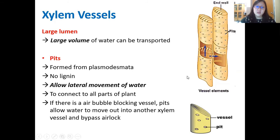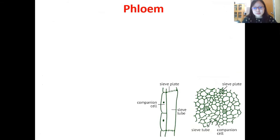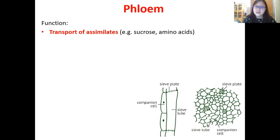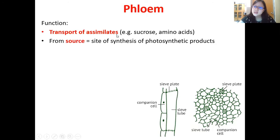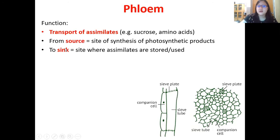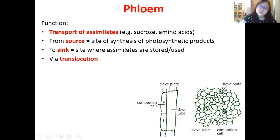Now let's talk about phloem. The overall function of phloem is to transport assimilates — substances produced by photosynthesis, such as sucrose or amino acids. This transport goes from source (where assimilates are produced) to sink (where they are stored or used). This process is called translocation, which we will cover in more detail in part two.